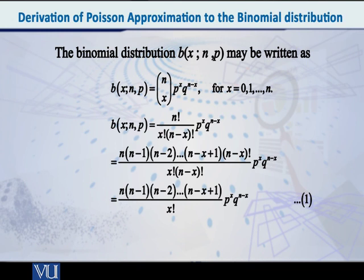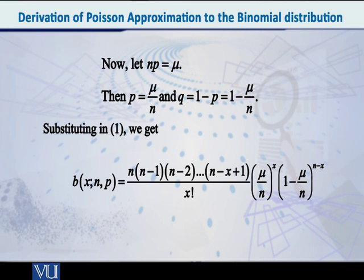If mu is equal to np, then it means that p is equal to mu by n, and q, which is equal to 1 minus p, can be written as 1 minus mu by n. Now these values of p and q that we have obtained, let us substitute these in the expression obtained earlier — which I am denoting by equation 1. So if we do that, what do we get?